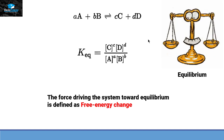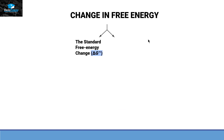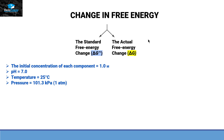The force driving this reaction towards equilibrium is the free energy change. We have two different types of free energy change. One is the standard free energy change, represented by ΔG° (delta G naught or delta G prime), and the other is the actual free energy change, represented by ΔG. The standard free energy change has certain criteria: the initial concentration of each component must be 1 molar, the pH must be 7, the temperature must be 25°C, and the pressure must be 1 atmosphere. If those criteria are met, we have a standard free energy change, which is a constant value.